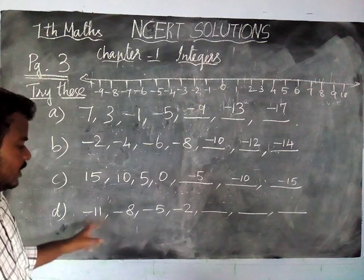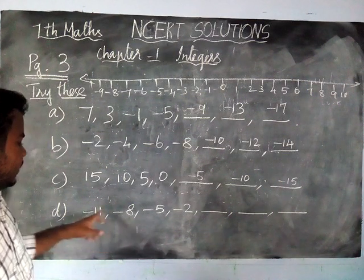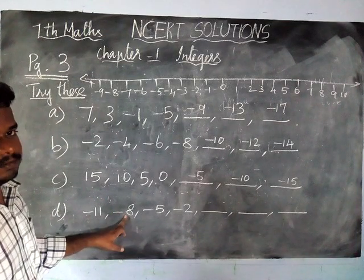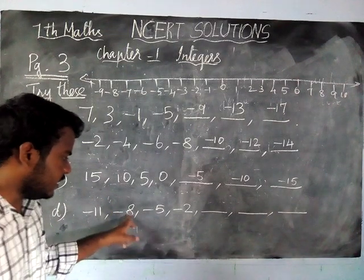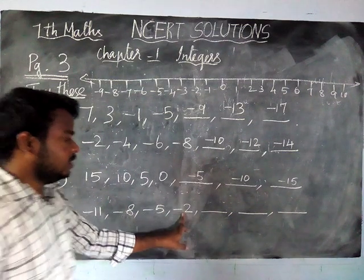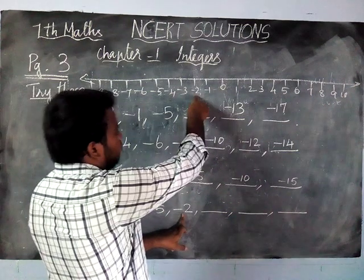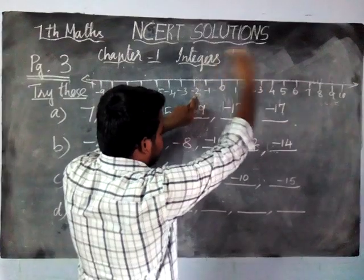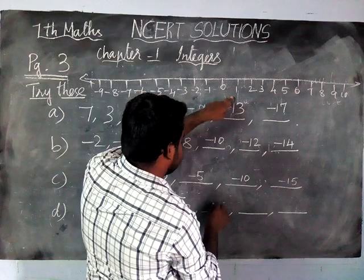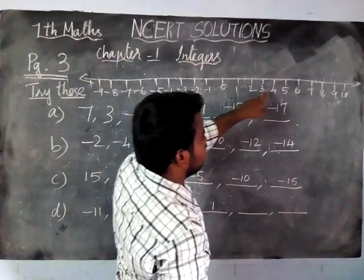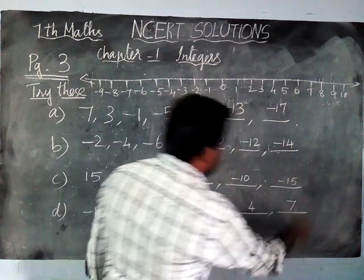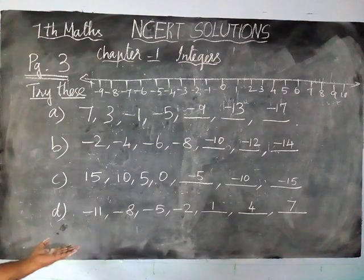Next pattern: -11, -8. The difference between these two is 3. From -8, moving 3 steps right: -5. Next 3 steps right: -2. From -2, moving 3 steps right, the answer is +1. Next 3 steps: 4. Next 3 steps: 7.